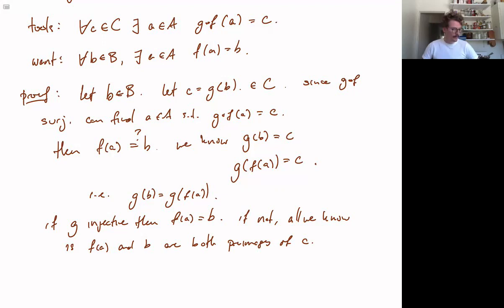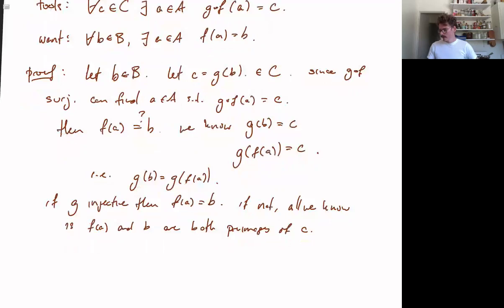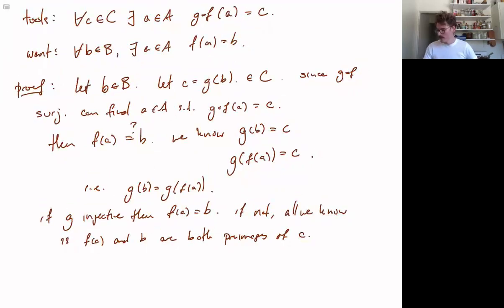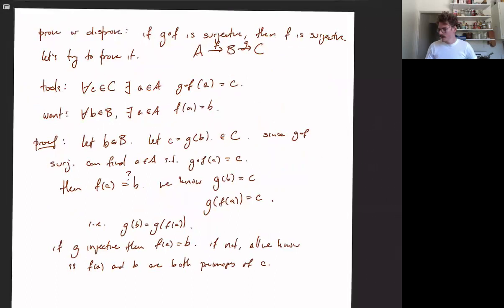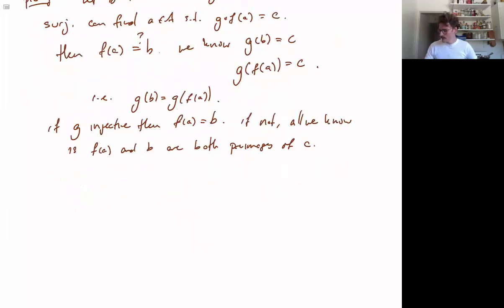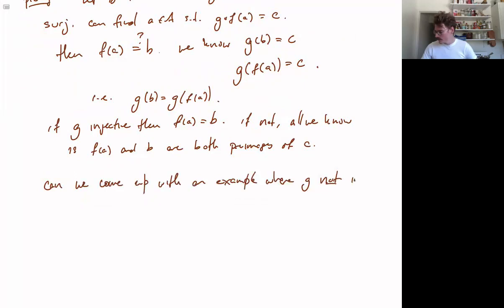So at this point we are stuck. We can identify what is stopping us: we want to say that g is injective, but we don't know that. If we look at our claim, there is no condition about g being injective. So let's try and look at an example — can we come up with one where g is not injective?